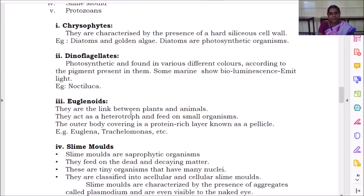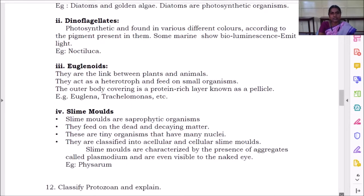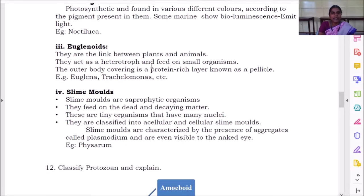Next is euglenoids. Euglenoids are the link between the plants and animals. They act as heterotrophs and feed on small organisms. The outer body covering is a protein-rich layer known as pellicle. Example is euglena and trachelomonas.